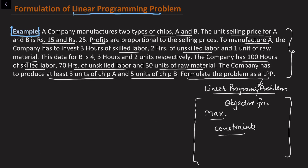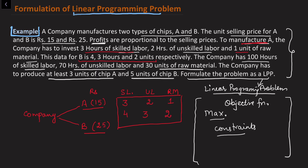Looking at the data again, there is a company which manufactures two chips A and B. The unit selling price is given — one chip A gives a profit of rupees 15, and chip B gives a profit of rupees 25. To manufacture chip A, there is a skilled labor requirement, unskilled labor requirement, and raw material requirement. For chip A: three hours of skilled labor, two hours of unskilled labor, and one unit of raw material. For chip B the data is four hours, three hours, and two units respectively.